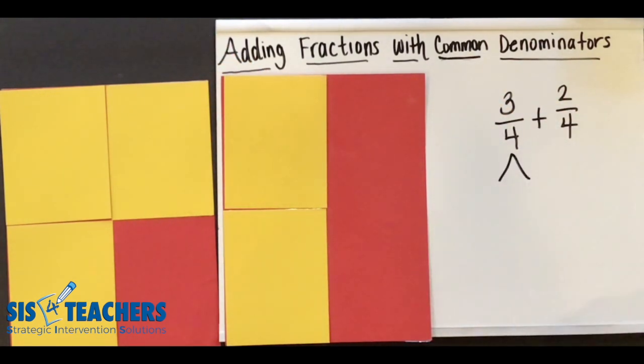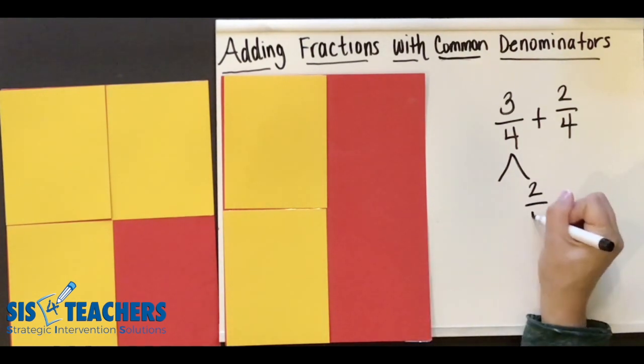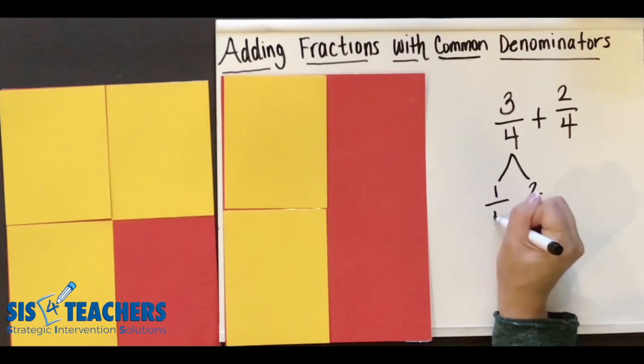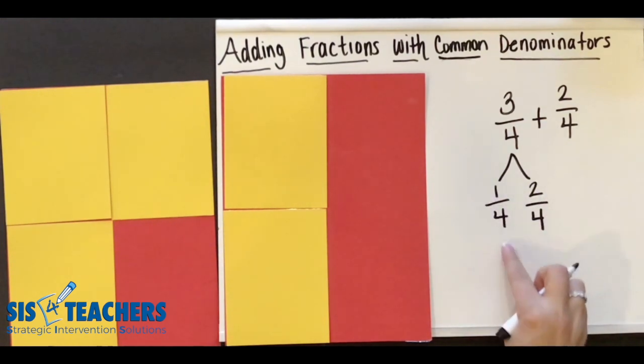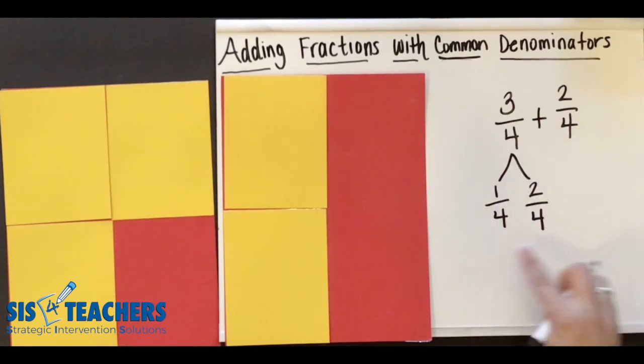So DC might take that three fourths and smash it and break it and decompose it. He might decompose it into two fourths and one fourth. Does two fourths and one fourth still equal three fourths? Yes.